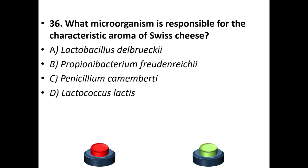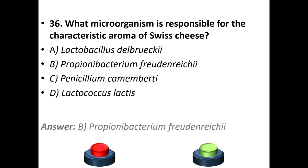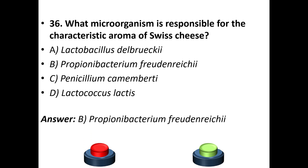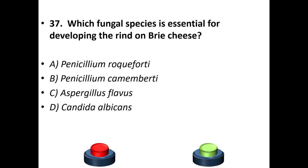Thirty-sixth question: what microorganism is responsible for the characteristic aroma of Swiss cheese? A: Lactobacillus delbrueckii. B: Propionibacterium freudenreichii. C: Penicillium camemberti. D: Lactococcus lactis. Answer is B — Propionibacterium freudenreichii. Thirty-seventh question: which fungal species is essential for developing the rind of Brie cheese? A: Penicillium roqueforti. B: Penicillium camemberti. C: Aspergillus flavus. D: Candida albicans. Answer is B — Penicillium camemberti.